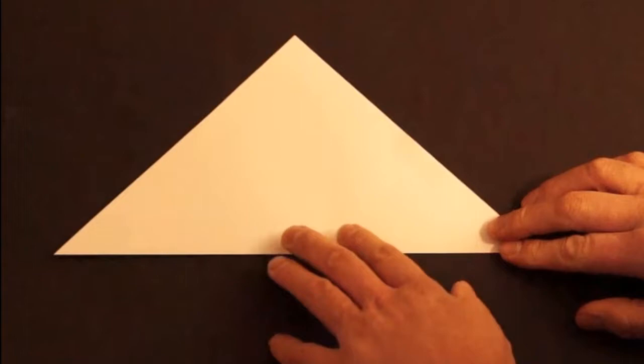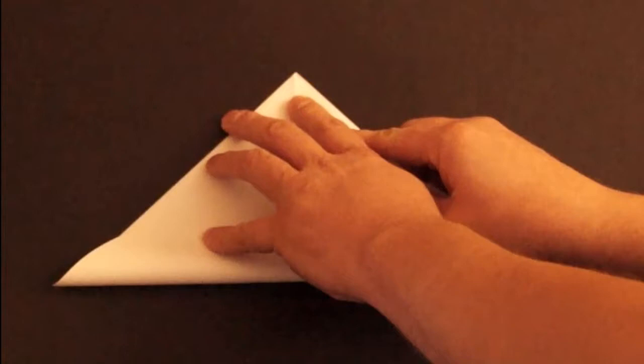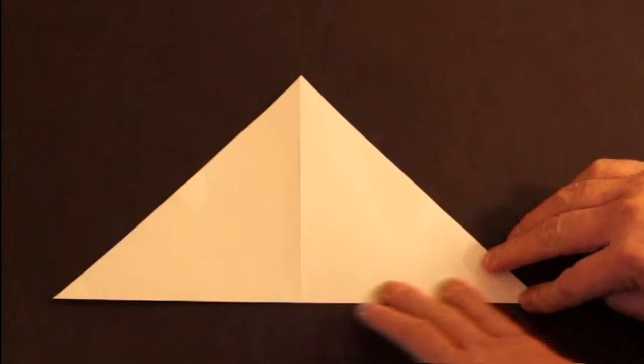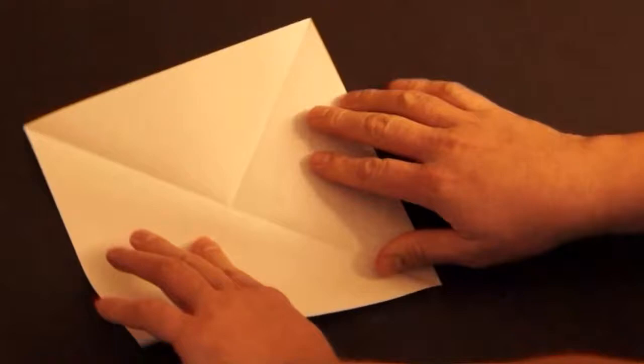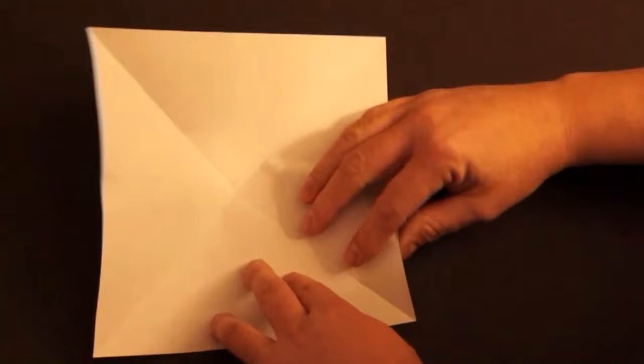Next we open it up. Turn it so the crease is vertical. Fold the bottom to the top. Open it back up. Where the creases meet is the center of the square. Fold the corners, all four corners to the center.